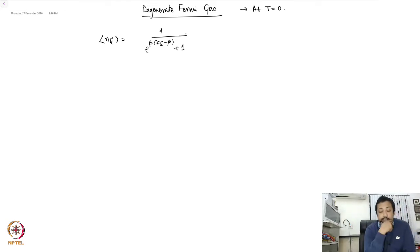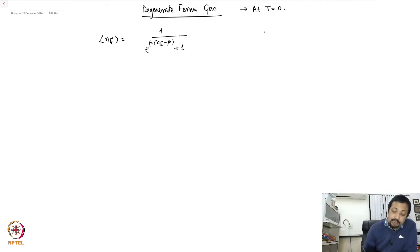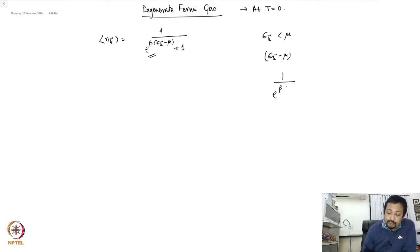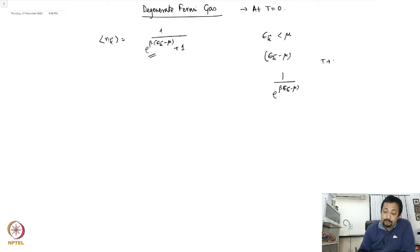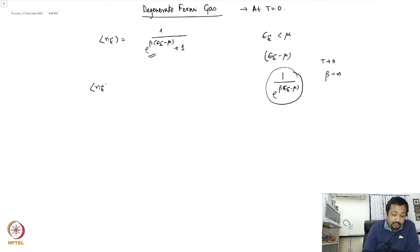We have to figure this out at T equal to 0, but one has to be careful. If epsilon_k is less than mu, then the term epsilon_k minus mu is negative. In the limit T to 0, beta is infinity, so this term vanishes and therefore the average occupation number equals 1 for all energy levels epsilon_k less than or equal to mu.